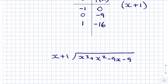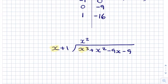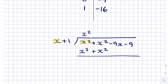To solve this, we look at our first term x³ and figure out how many x's go into x³ — that's x², because x × x² = x³. We then multiply x² by the x and the 1 in our divisor, getting x³ and x². We subtract these terms: x³ - x³ = 0 and x² - x² = 0, leaving us with -9x and -9, which we carry down.